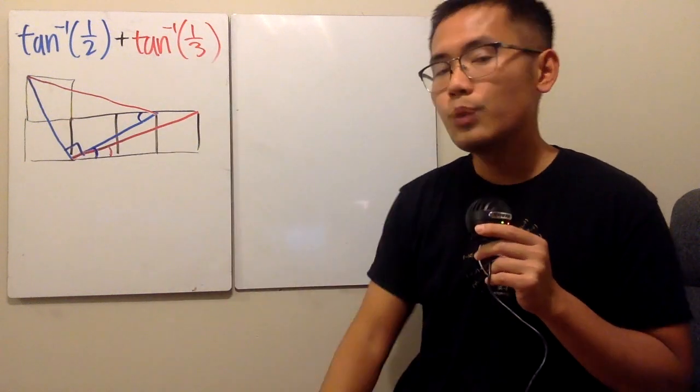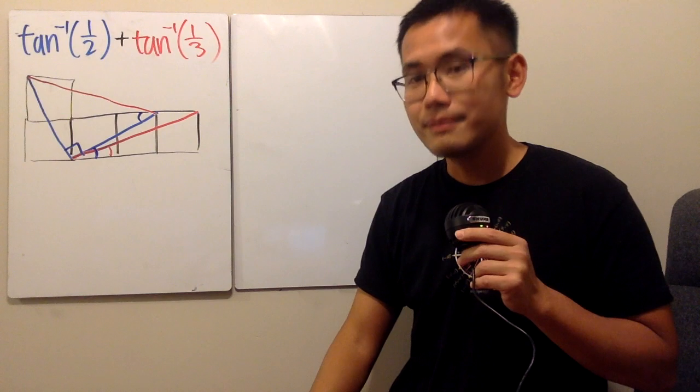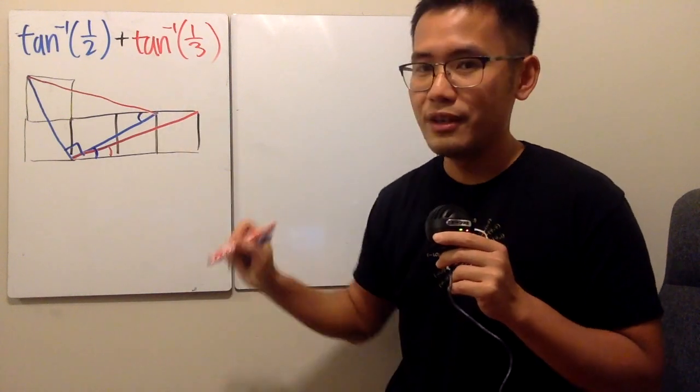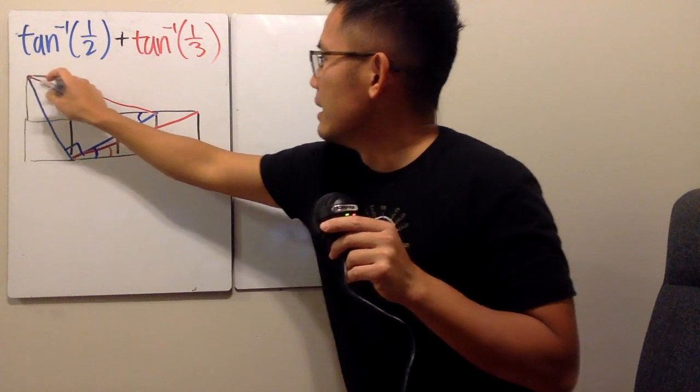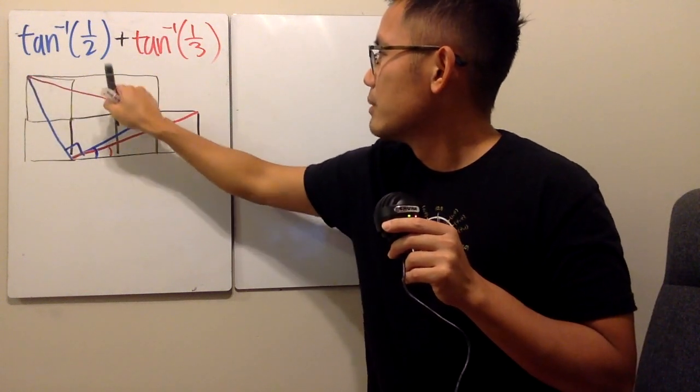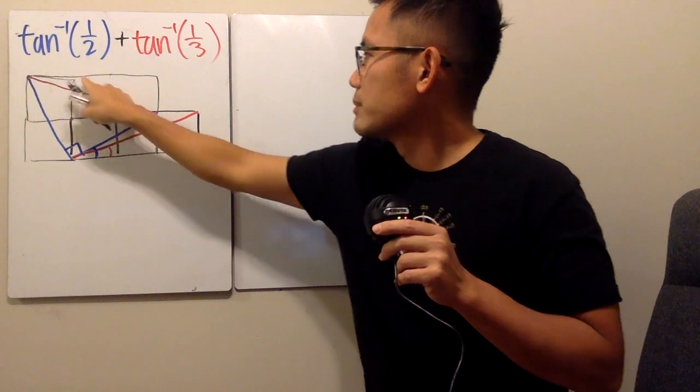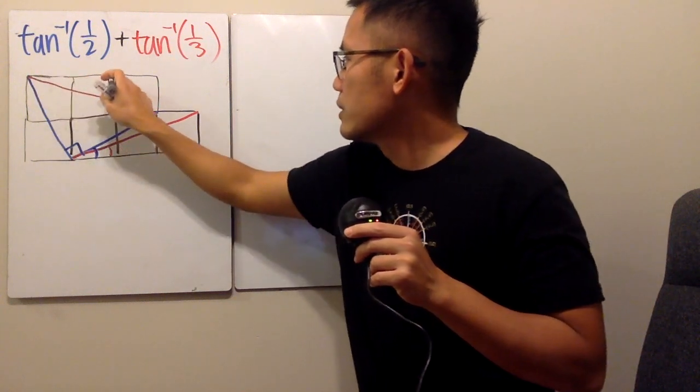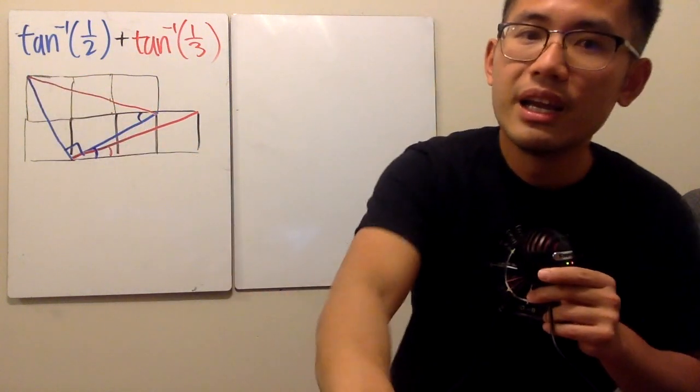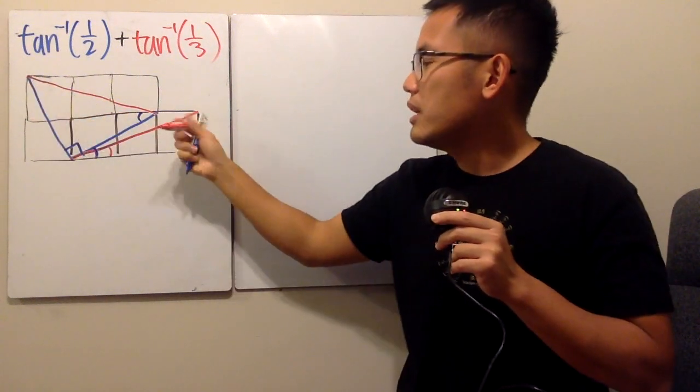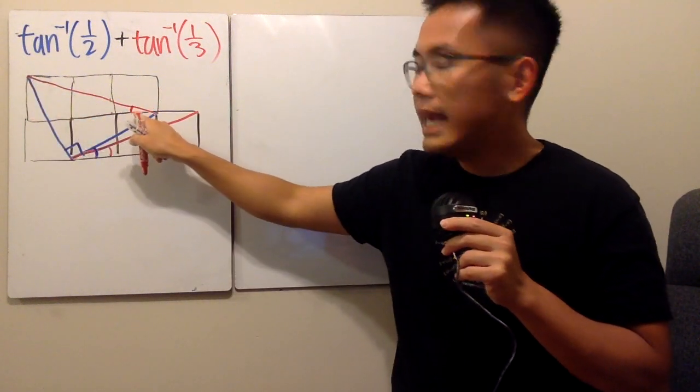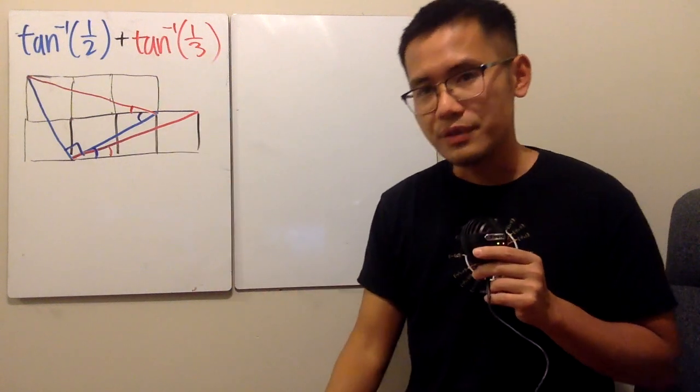How about inverse tangent of 1 third? Where is that? Yes, that's precisely right here. Why? If you would like, just go ahead and make your squares. Make your squares, right? I'm sorry about my picture, but make your squares like this. And as you can see, opposite is 1, adjacent is 3. So this right here is the angle in red, namely inverse tangent of 1 third.